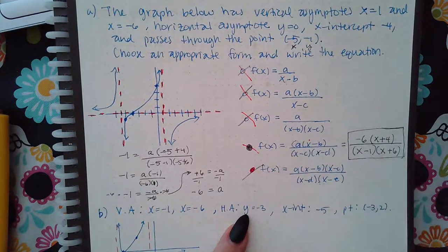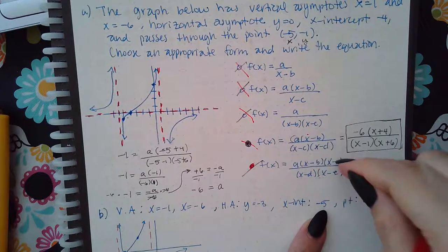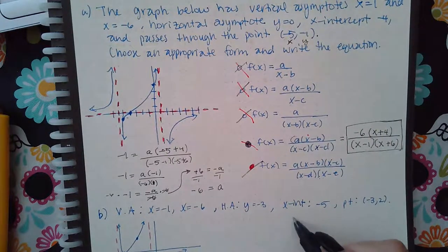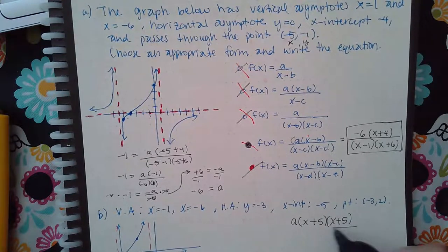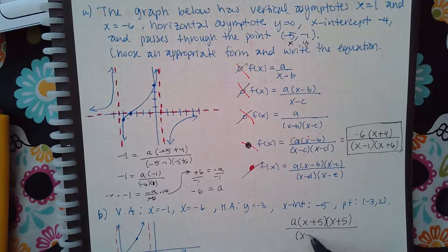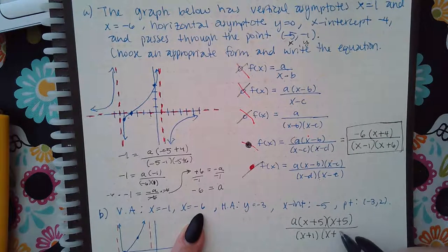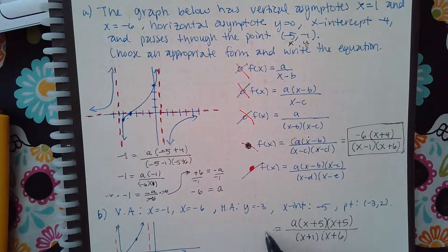So for problem B, that form is the one we'll use. The x-intercept is negative five — just one. But we need two factors in the numerator. The way that works is if (x minus negative five), which is (x plus 5), appears twice as a repeated factor — two of the same factor gives you the same x-intercept. For the denominator: x minus negative one gives (x plus 1), and x minus negative six gives (x plus 6).